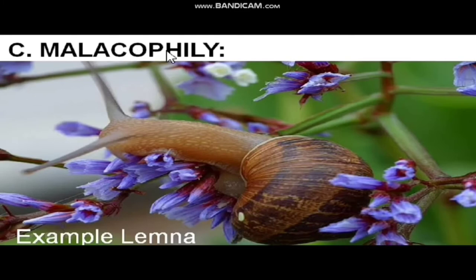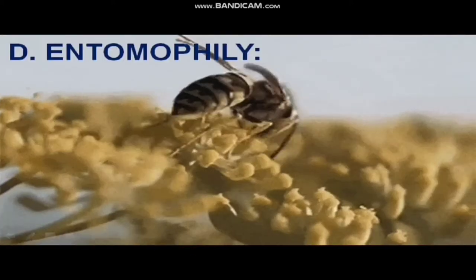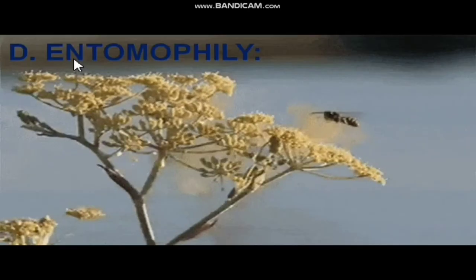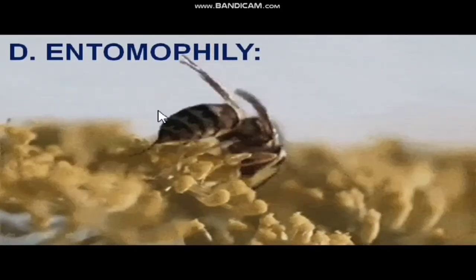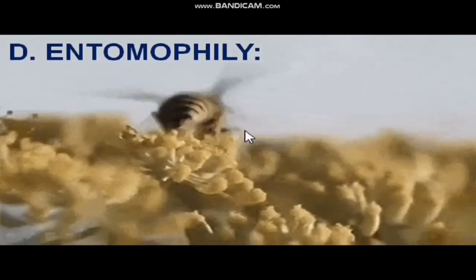The next example in zoophily is malacophily. As you can see in this picture, snails are also helpful in pollination — they come in search of nectar and as a result of getting the nectar they help in pollination. The example plant for this is Limna.